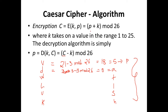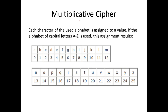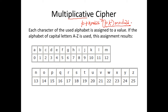In Caesar cipher we take the value of the alphabet and add it with the key. Now we'll move on to the multiplicative cipher. The difference is small: in Caesar cipher we add the key, whereas in multiplicative cipher, as the name suggests, instead of adding we multiply by the key. The encryption formula becomes: (p × k) mod 26, where 26 represents the number of alphabets.